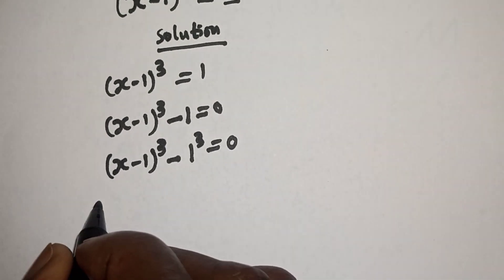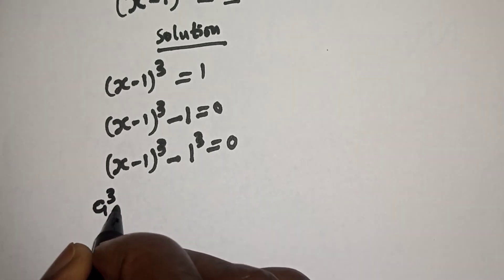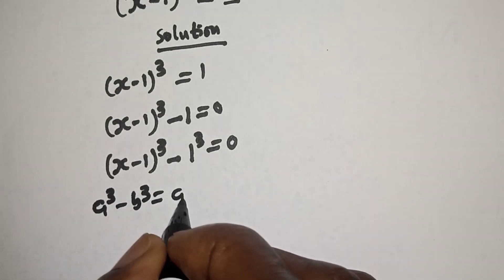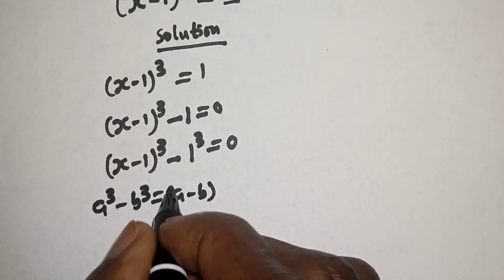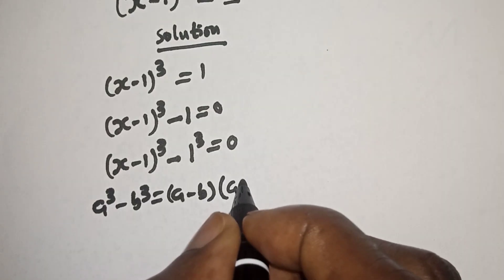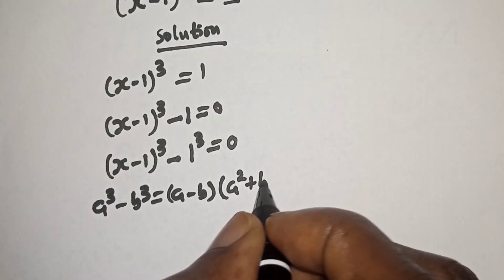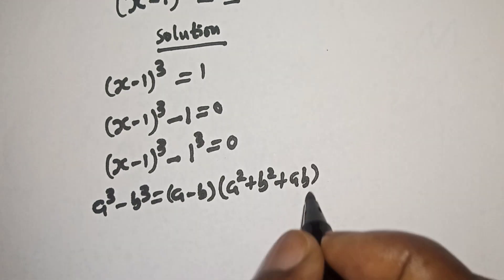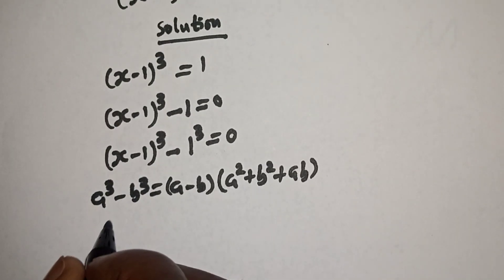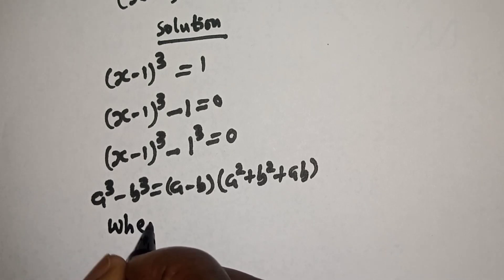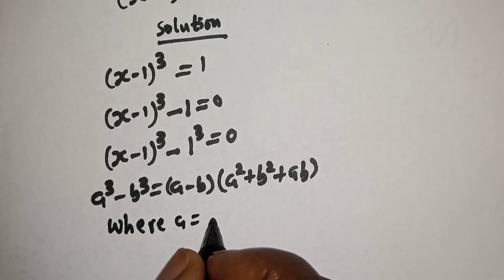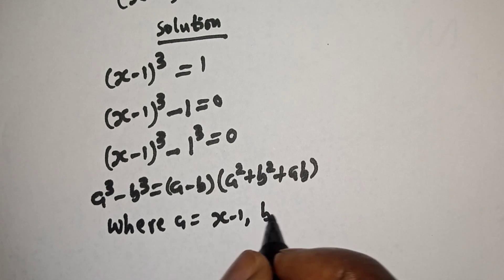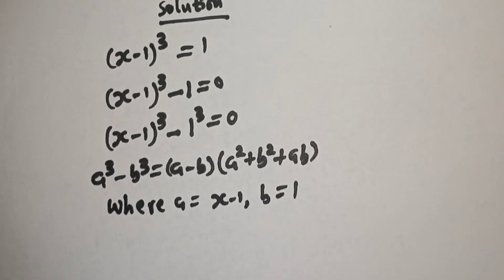Take note that if you have A raised to power 3 minus B raised to power 3, this is equal to A minus B, multiplied by A squared plus B squared plus AB. Here, A is equal to S minus 1 and B is equal to 1. Let's substitute.